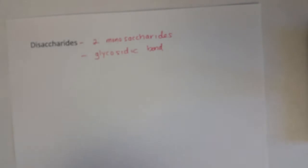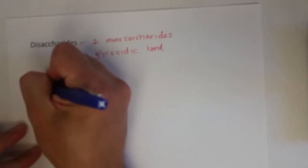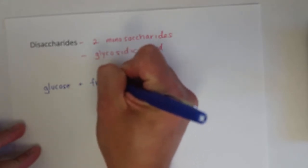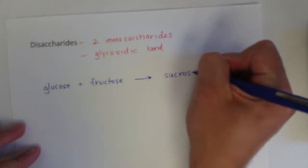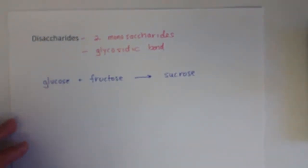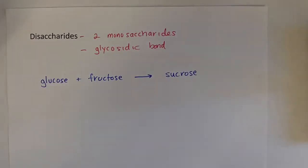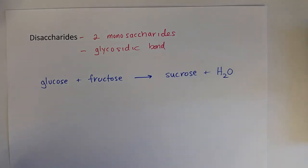Three really common disaccharides: one is formed between glucose and fructose, which makes regular table sugar — sucrose. When that glycosidic bond is formed, it occurs with the loss of water, so water is also one of your products.